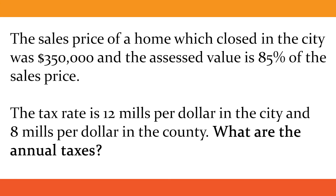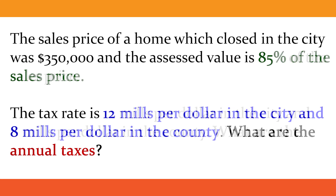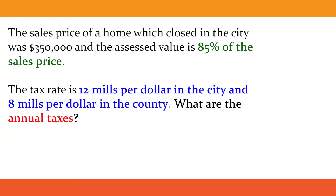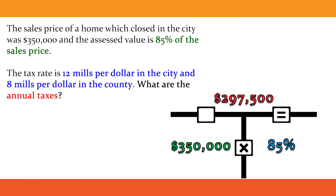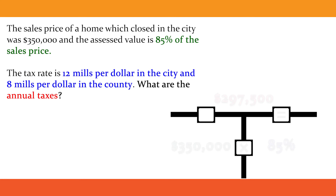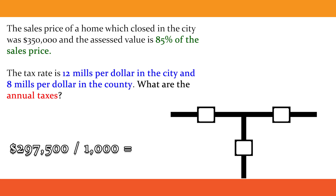First, we need to find the assessed value. We know that it is 85% of the sales price. $350,000 times 85% equals an assessed value of $297,500. Now that we know the assessed value, we need to divide it by 1,000. $297,500 divided by 1,000 equals $297.50.